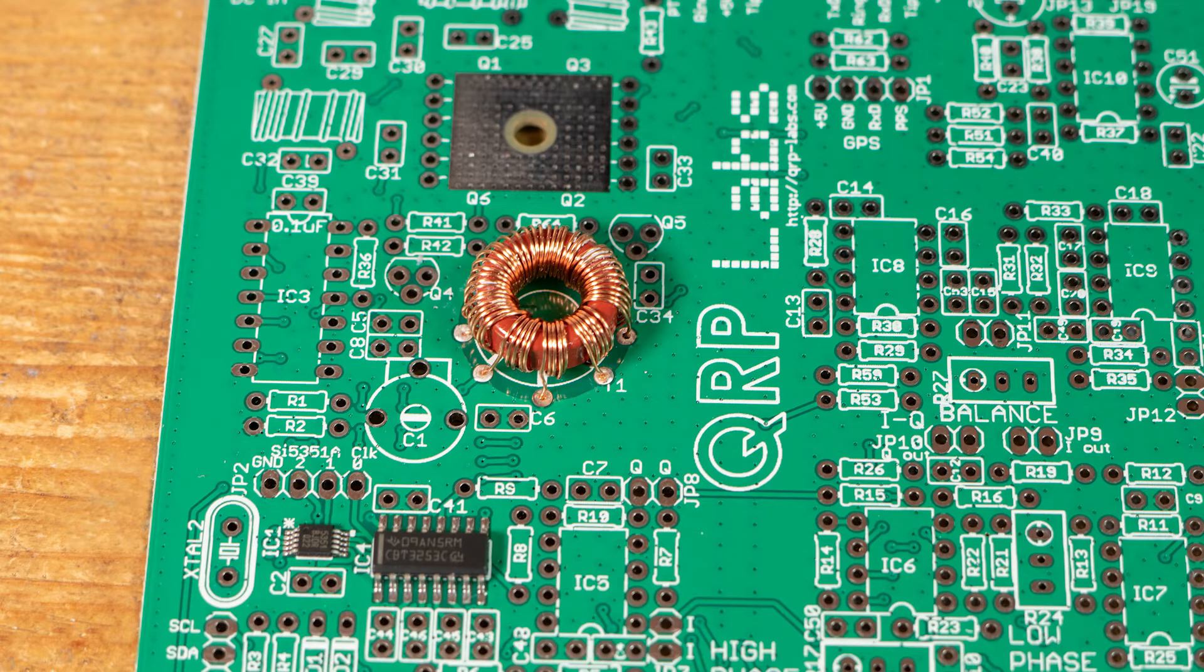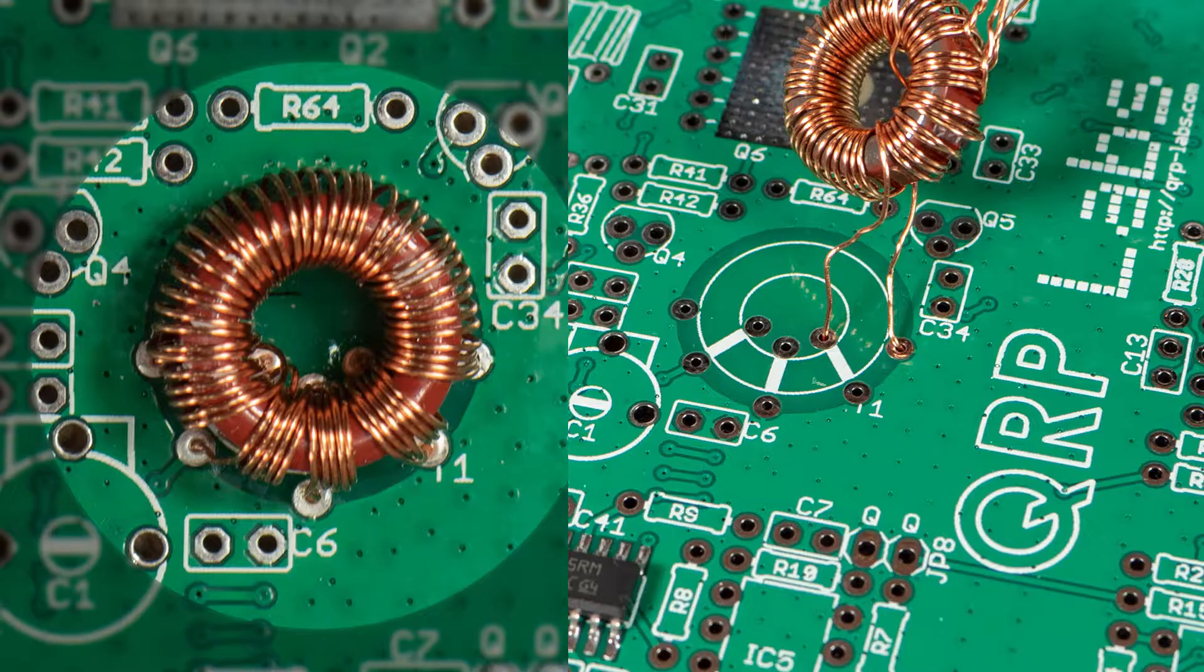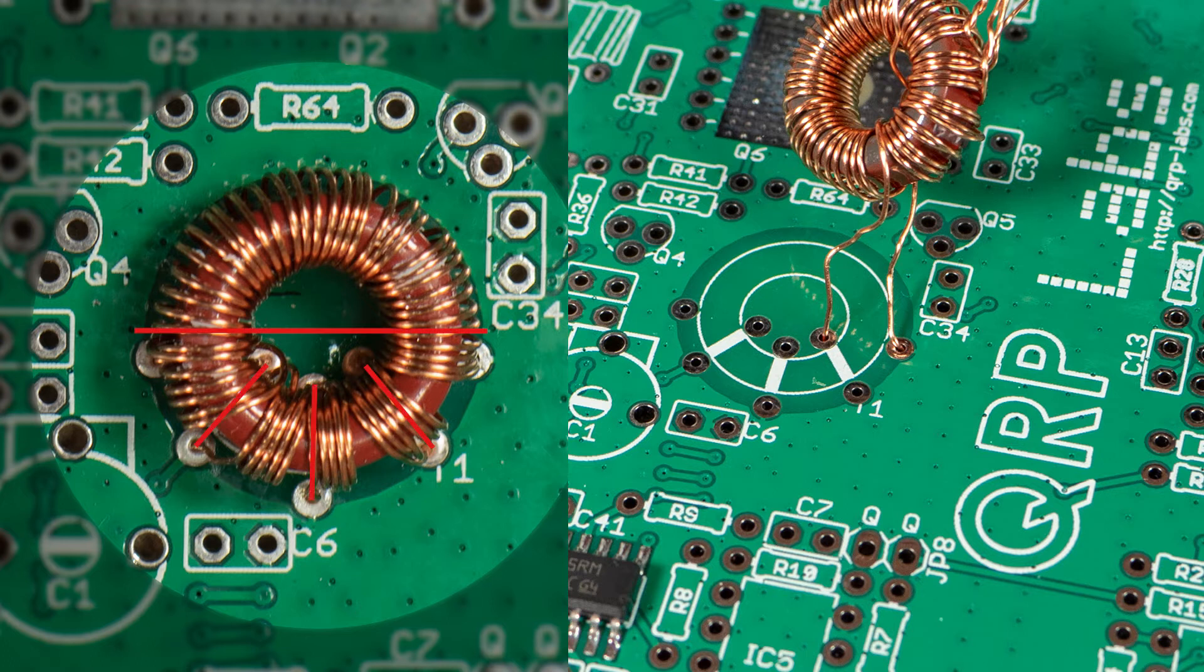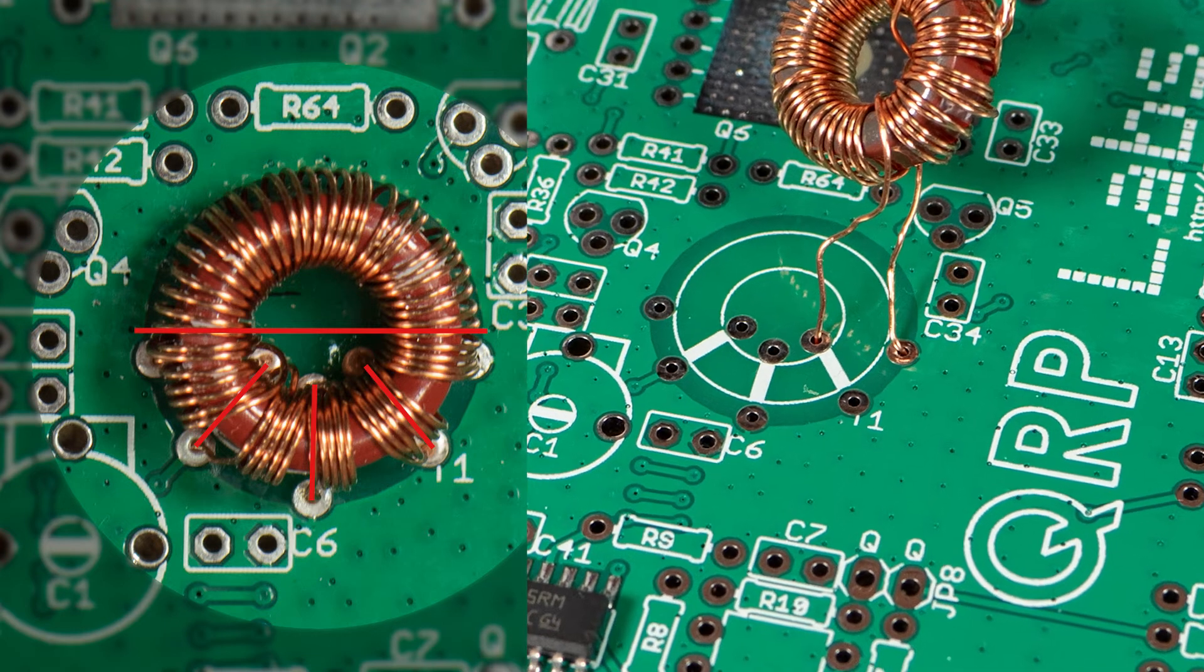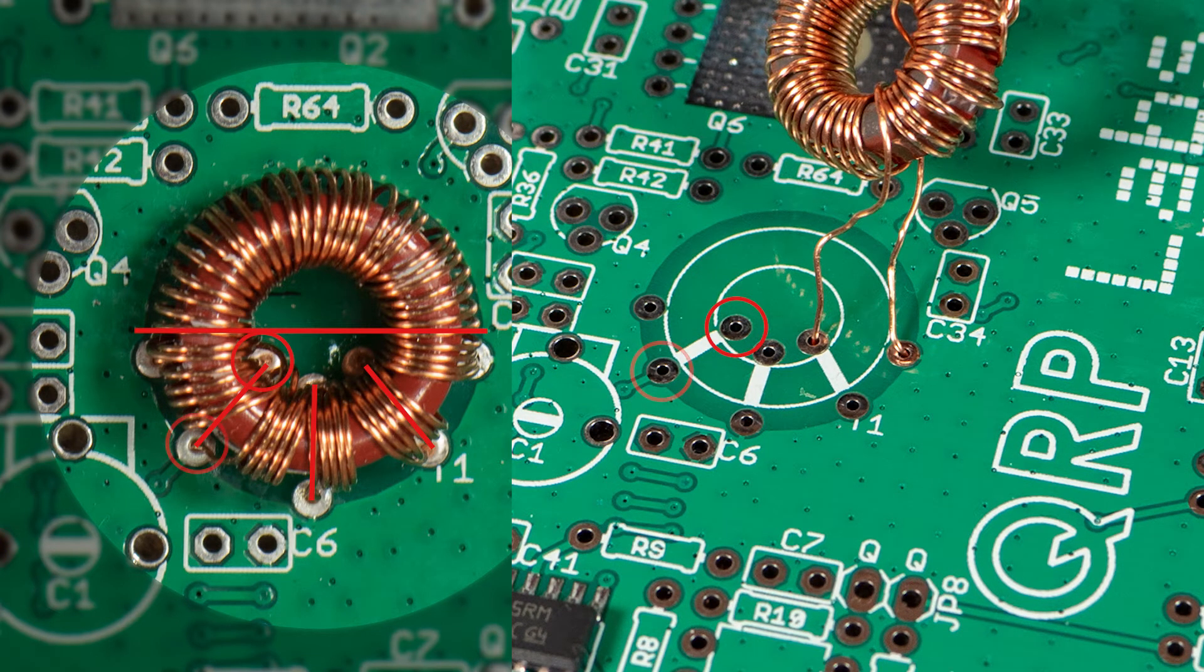It can seem a bit confusing at first but the layout of the coils is quite straightforward. The main primary goes horizontally across the PCB and the smaller windings fit inside it, being soldered vertically with one leg of each inside and the other outside the toroid.